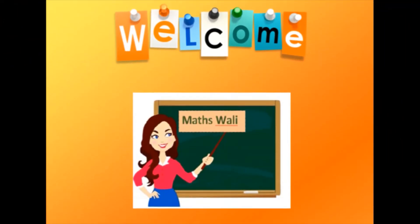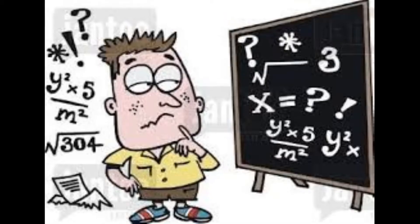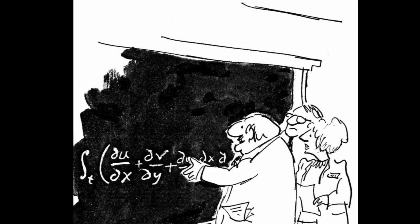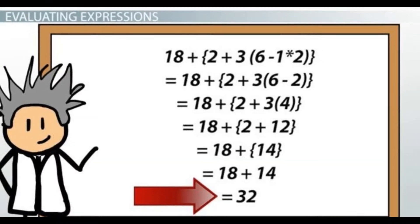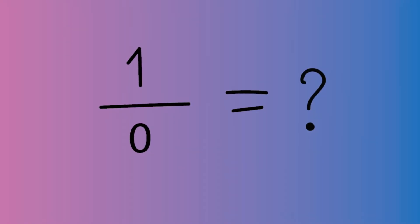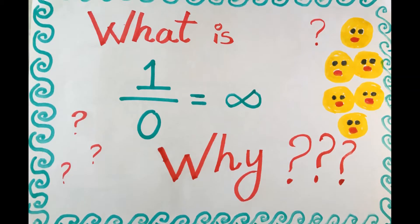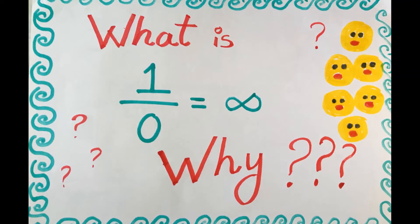Hey guys, welcome to my channel MathsWari. If you have done math, you will have come in front of many equations, and then you will have seen some equations. In that, you will have seen this equation: 1 upon 0. Do you know what is 1 divided by 0? It equals infinity. But do you know why?